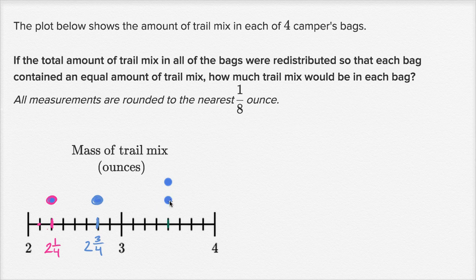And now there are two dots right over at this point. So there are two bags that have this many ounces of trail mix. How many ounces is this? Three and one eighth, two eighths, three eighths, four eighths — so that's three and four eighths. Four eighths: they're both divisible by four. Four divided by four is one, eight divided by four is two. This is the same thing as three and one half.